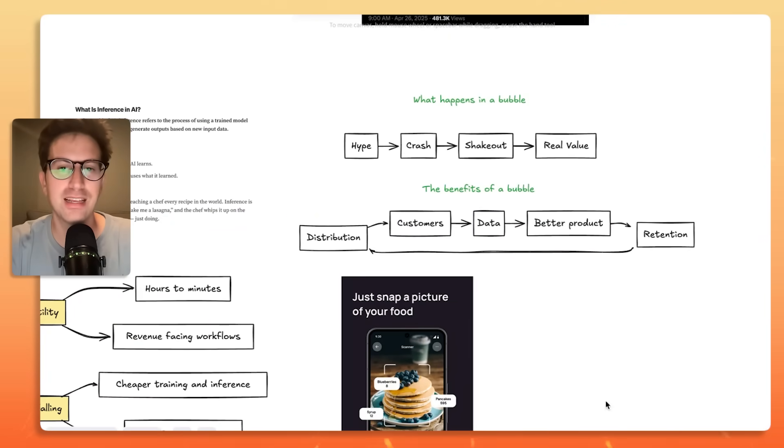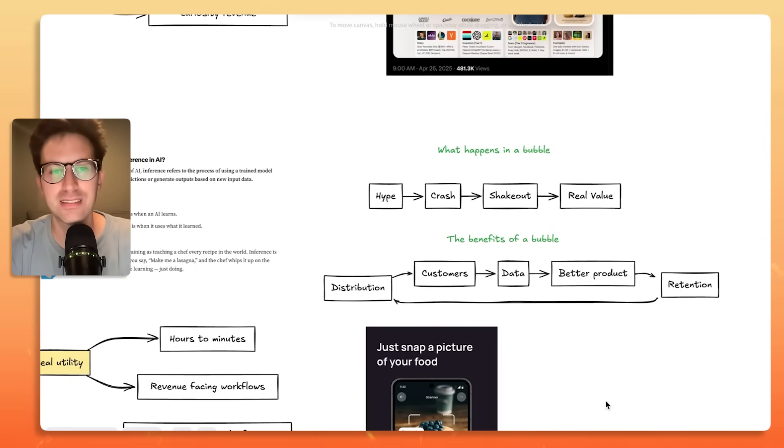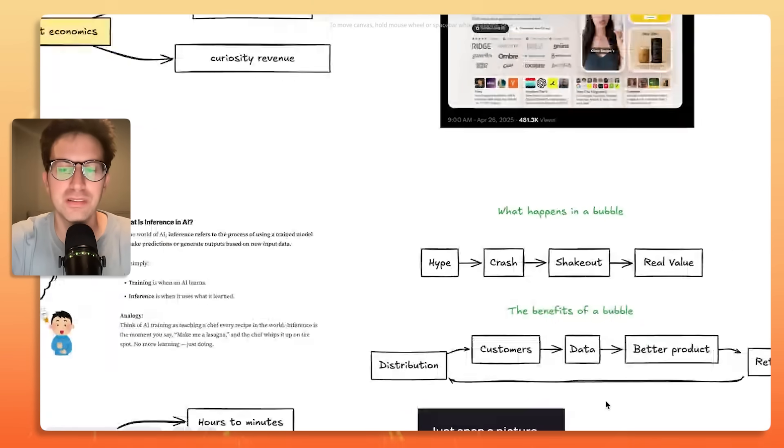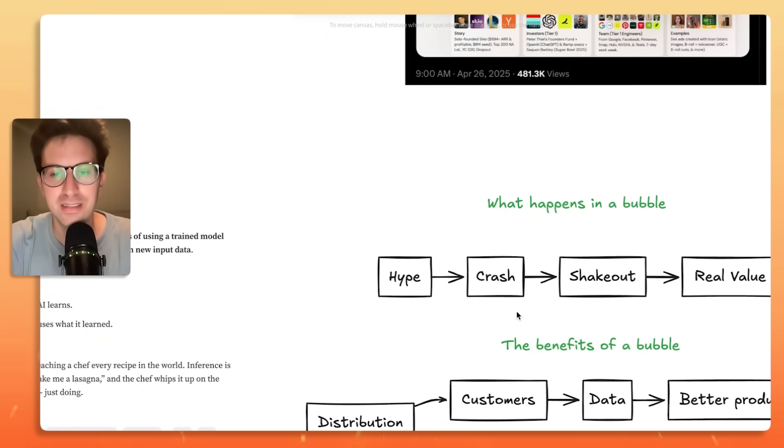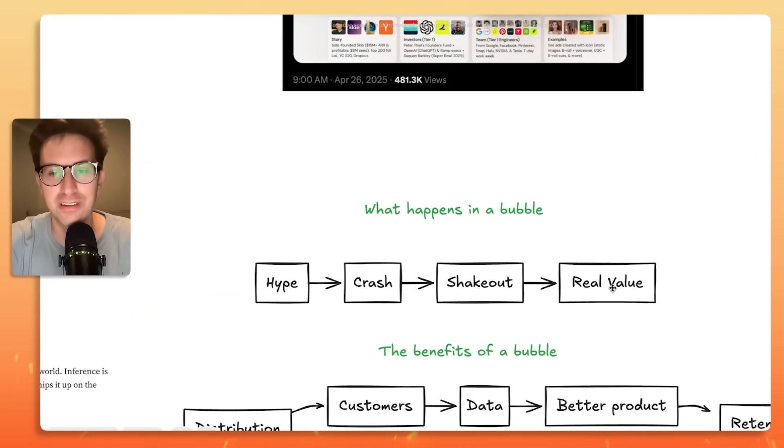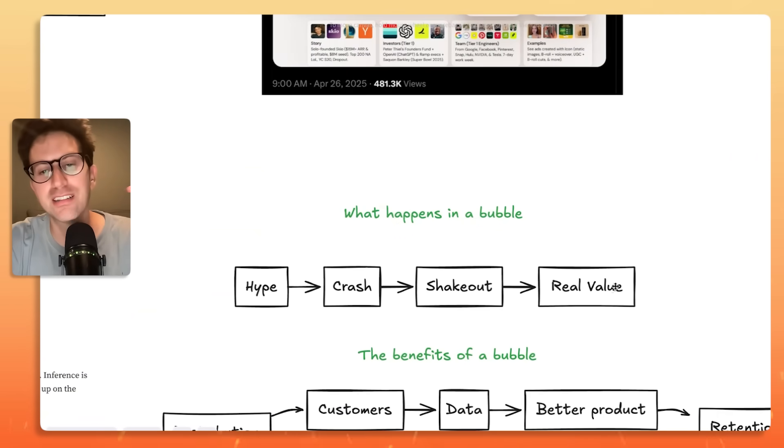So, I want to end with a few things. I want to talk about what happens in a bubble. Well, even in a bubble, it'll start with hype. And by this is someone, I've lived through a few of these bubbles. It starts with hype, there's a crash, there's a shakeout, and there's real value. Even in the dot-com era, right? Everyone says, oh, the dot-com era, pets.com raised at this crazy valuation, and it was nothing. Amazon came out of the dot-com era, which is like a trillion-dollar company. There's going to be, if it is a bubble, there's still going to be a trillion-dollar company that comes out of this era.